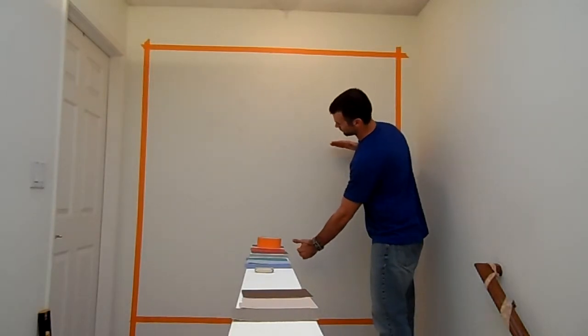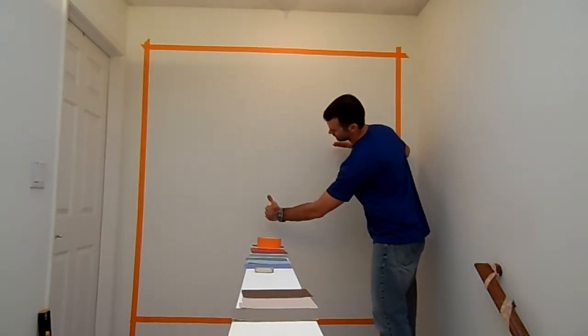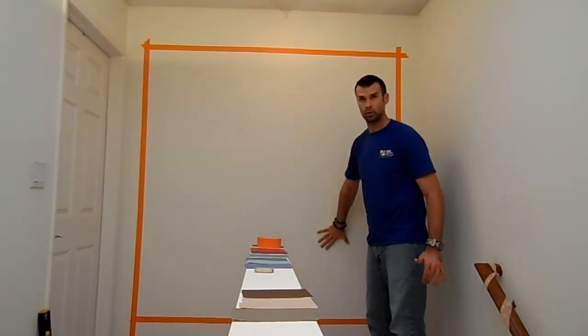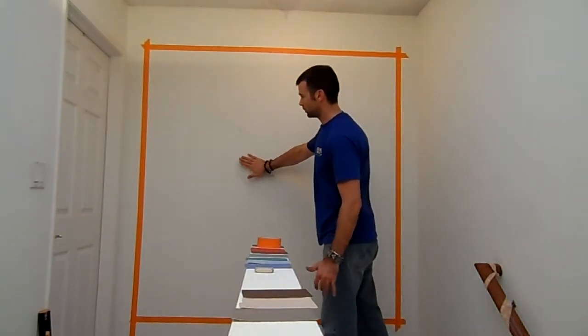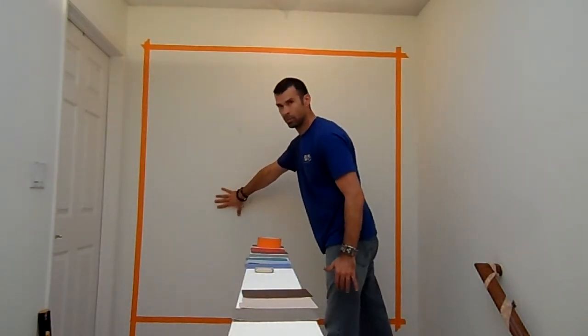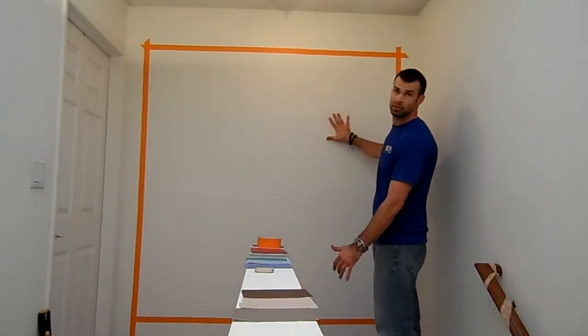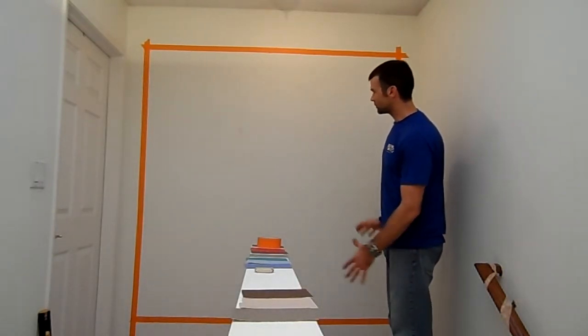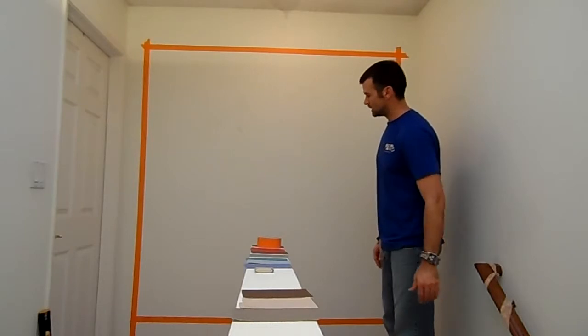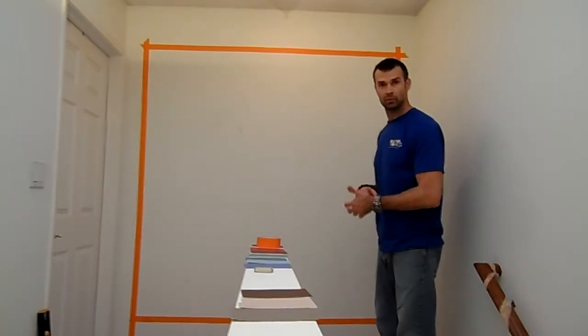And then what we're going to do is we're going to tape on this side so we can paint this quadrant down on the lower left hand side. Because we're going to be overlapping into our bottom left and overlapping into the top right. So we're going to start out with two colors and then after they dry, we're going to paint the rest.